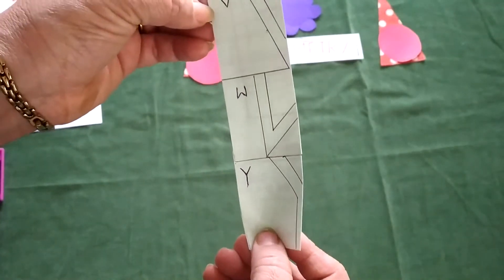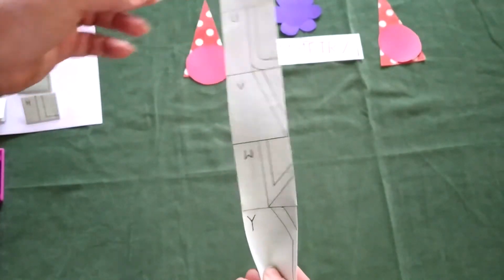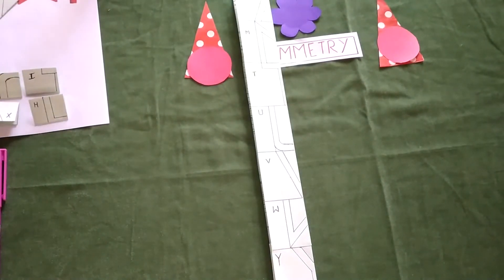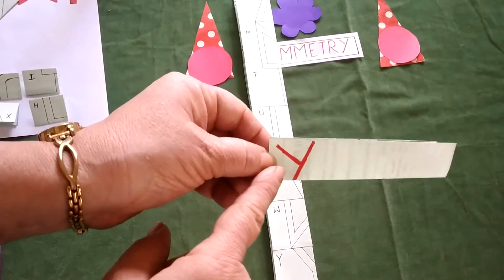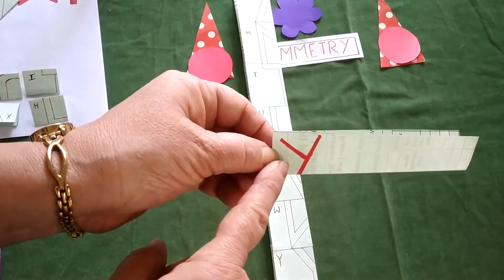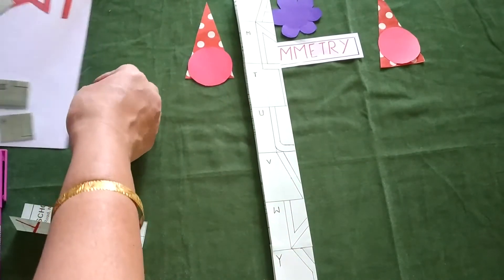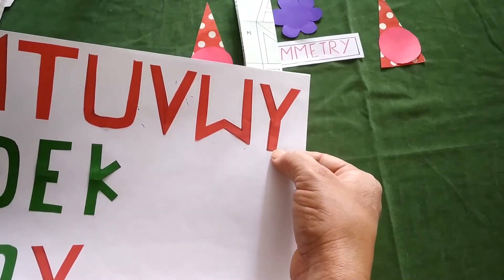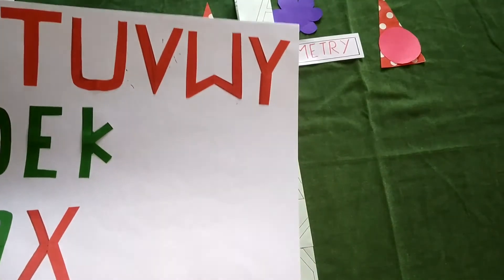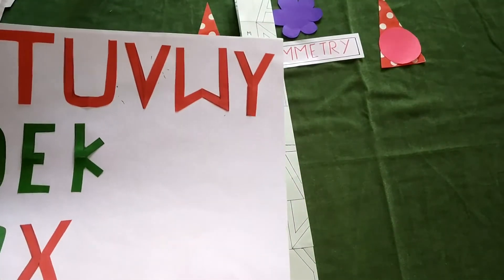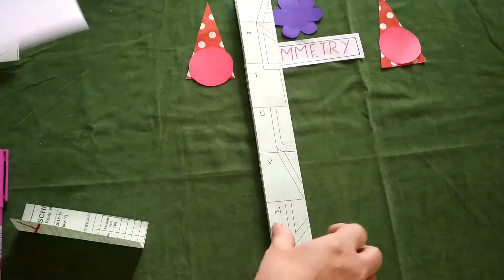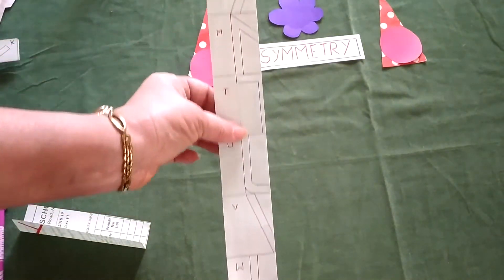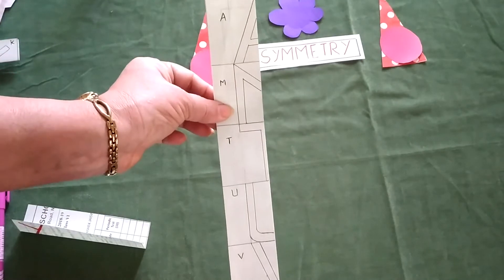Again I am telling you symmetry is based upon the figure, the letter we are writing. If we will write Y in this way we will get no line of symmetry in this Y but for this Y your line of symmetry will be 1 that is vertical line of symmetry. So it depends the way we write the letter. So this is the way you need to write down all the letters with the vertical line of symmetry.